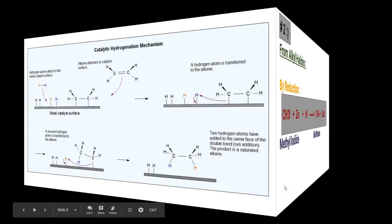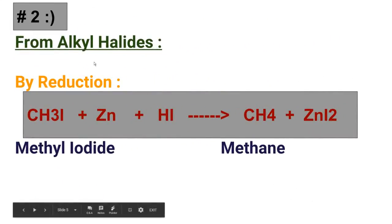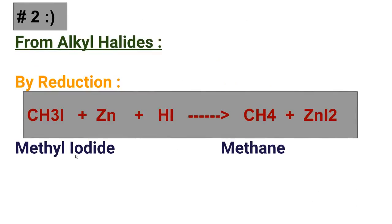Now let's see the preparation of alkane from alkyl halides by reduction process. Alkyl halide is converted into alkane. Here, methyl iodide is used with zinc and hydrogen iodide or aqueous acid. Zinc takes the iodide ion from the molecule and another iodide, forming zinc iodide and satisfying its oxidation state. Nascent hydrogen is produced and taken by the alkyl group — the methyl group — and methane is formed. So by the reduction process, alkyl iodide is converted into alkane in the presence of zinc and hydrogen iodide or aqueous acid.